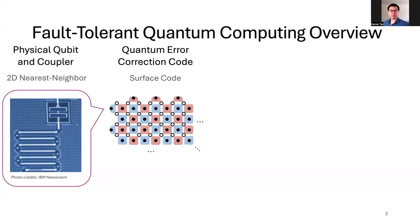We need quantum error correction because without it, we cannot control the errors that happen all the time on a quantum computer. The noise level is also much higher than conventional semiconductors, so large-scale quantum computing cannot survive without a quantum error correction code. In the surface code representation, each data qubit is a circle and each ancilla or measurement qubit is a dot. Both are physical qubits made from the same material, but they have different roles.